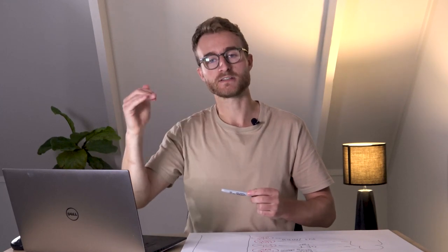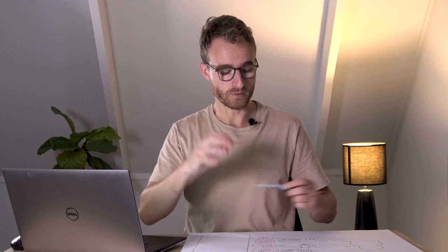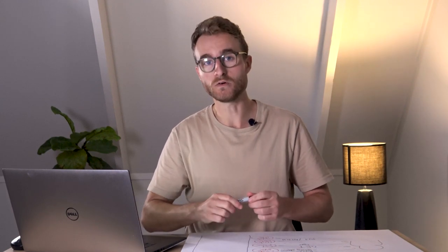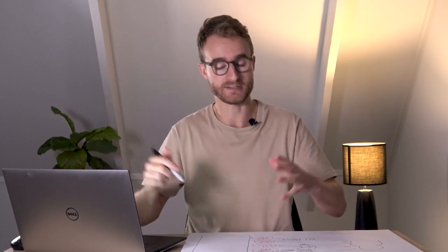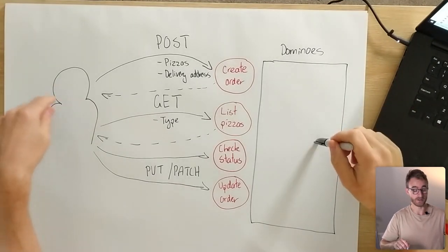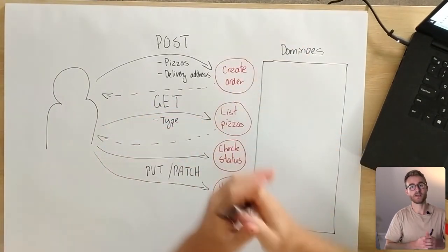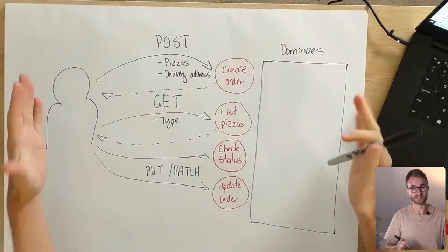Before we get into practically connecting with an API, there are several high-level categories of APIs. What we're talking about here is called a REST API, which is the most common type you'll encounter on the web. There are other types, but at a high level, all APIs allow two different services — in our silly example, a user and Domino's Pizza — to interact. Once that interaction is set up, we call that an integration.